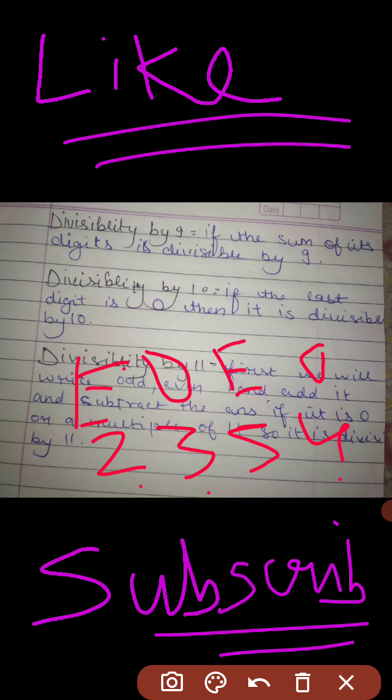We will add all odds together, then add all evens separately. When we subtract odd minus even, we will get zero or 11, so it is divisible by 11.